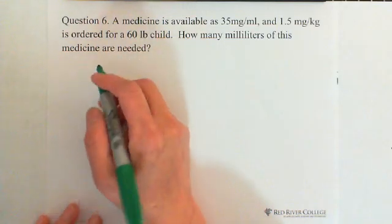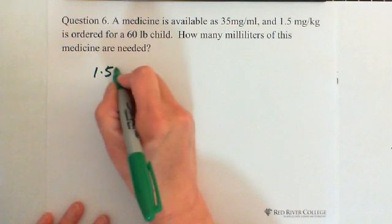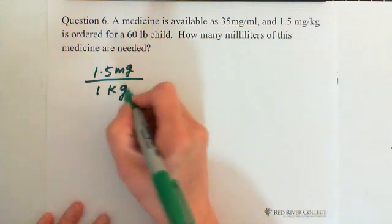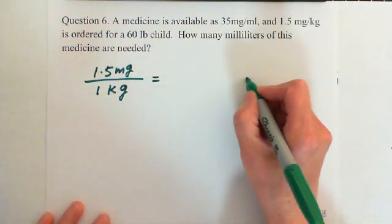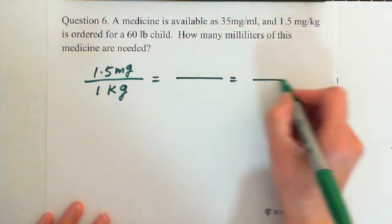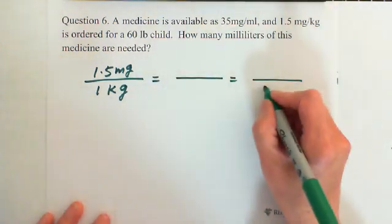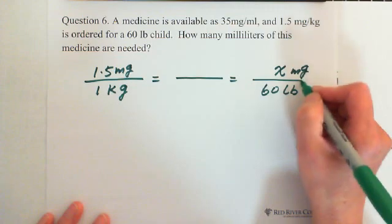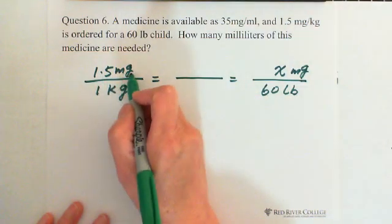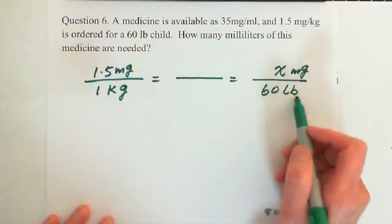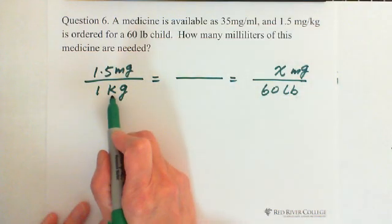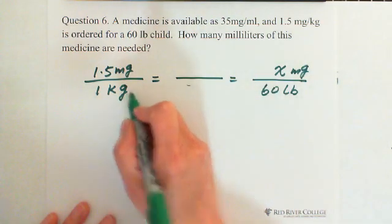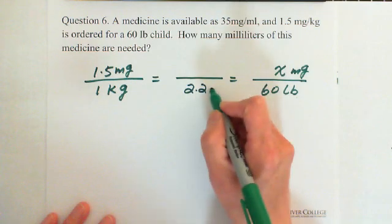The dose is 1.5 milligrams per kilogram, and the child weighs 60 pounds. But these two units don't match — so we convert kilograms to pounds: 1 kilogram multiplied by 2.2 becomes 2.2 pounds, with a dose of 1.5 milligrams. Now we can work with these two parts together.